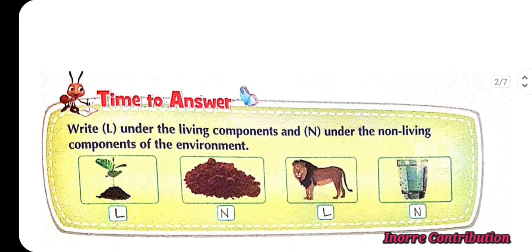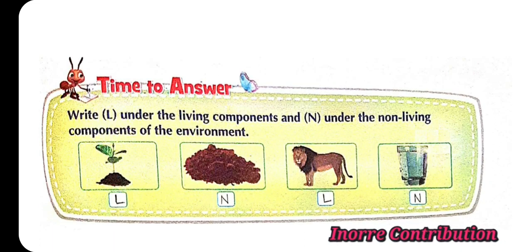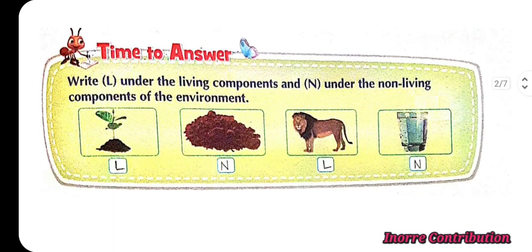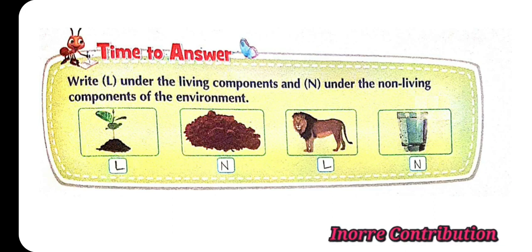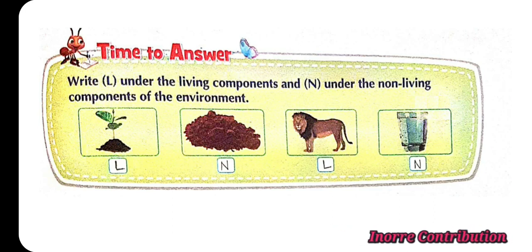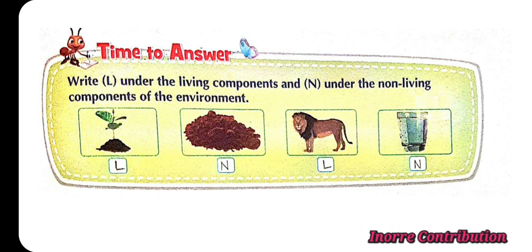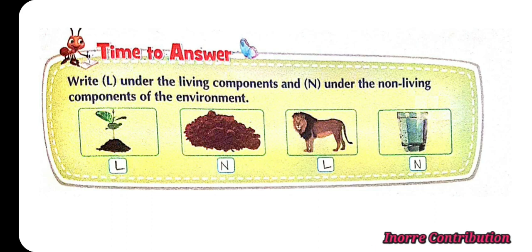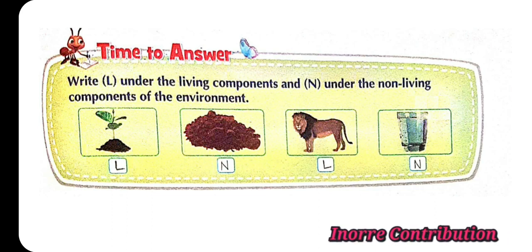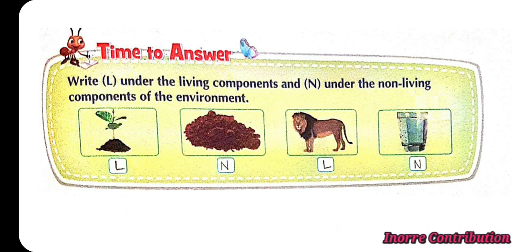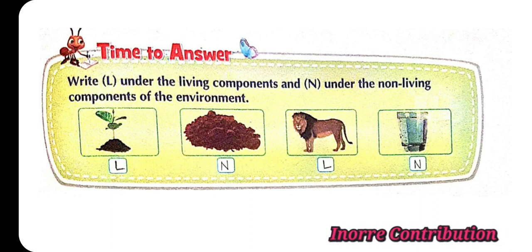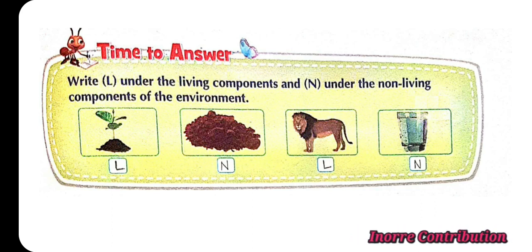Time to answer: Write L under the living components and N under the non-living components of the environment. First picture: small plant — living, L. Second picture: soil — non-living, N. Third picture: lion — living, L. Water — non-living, N.